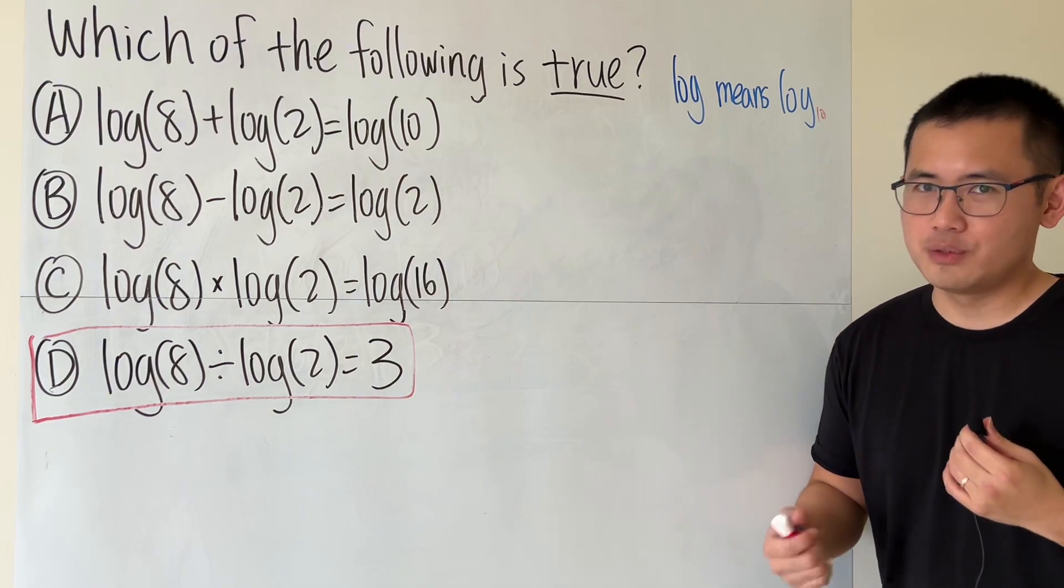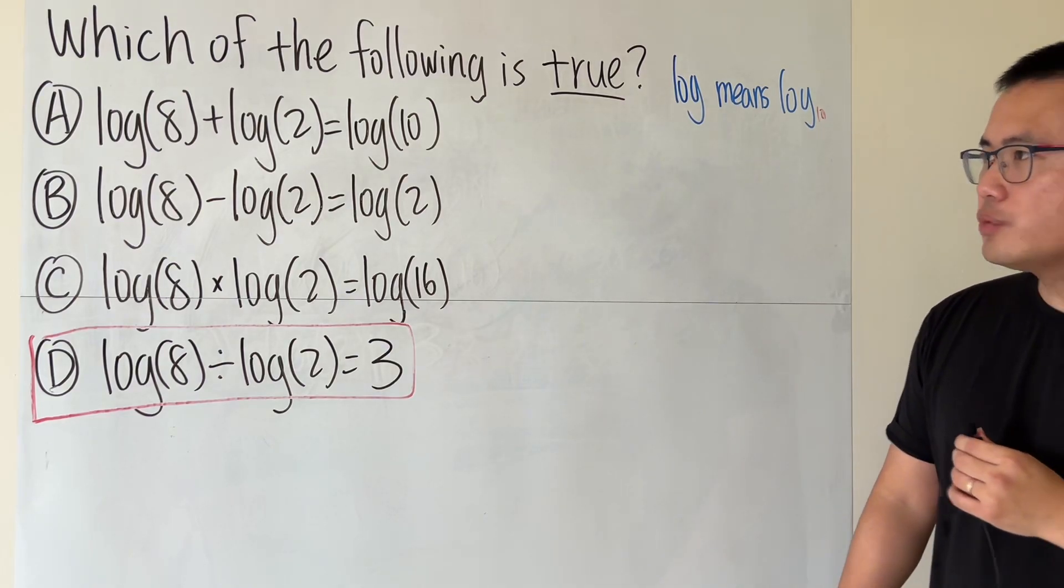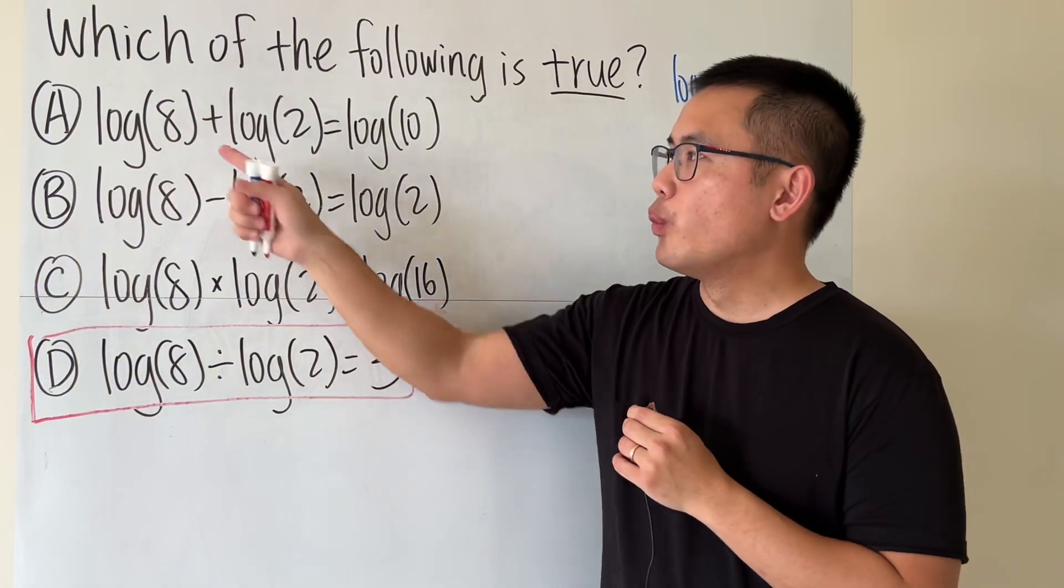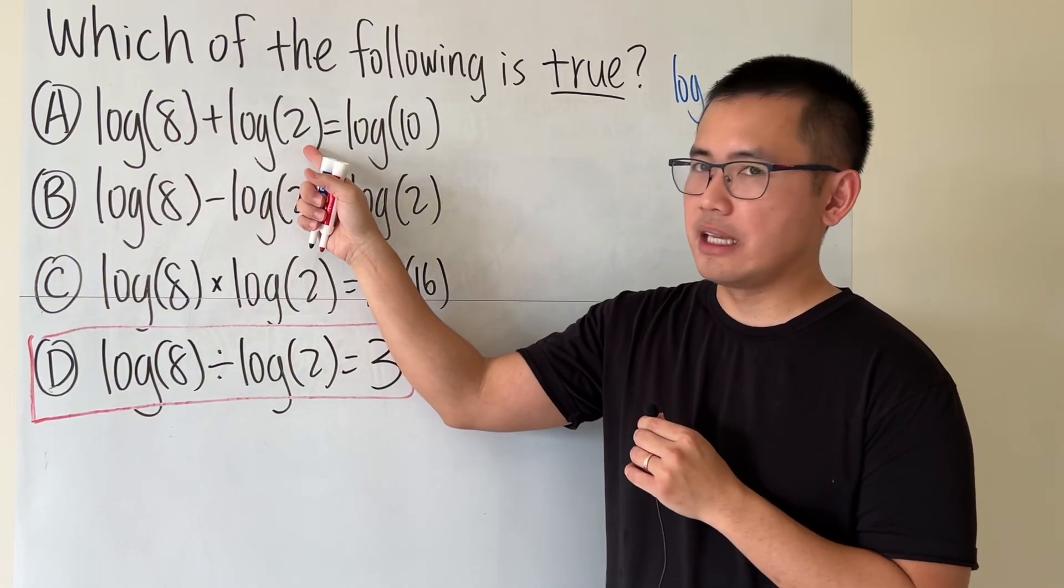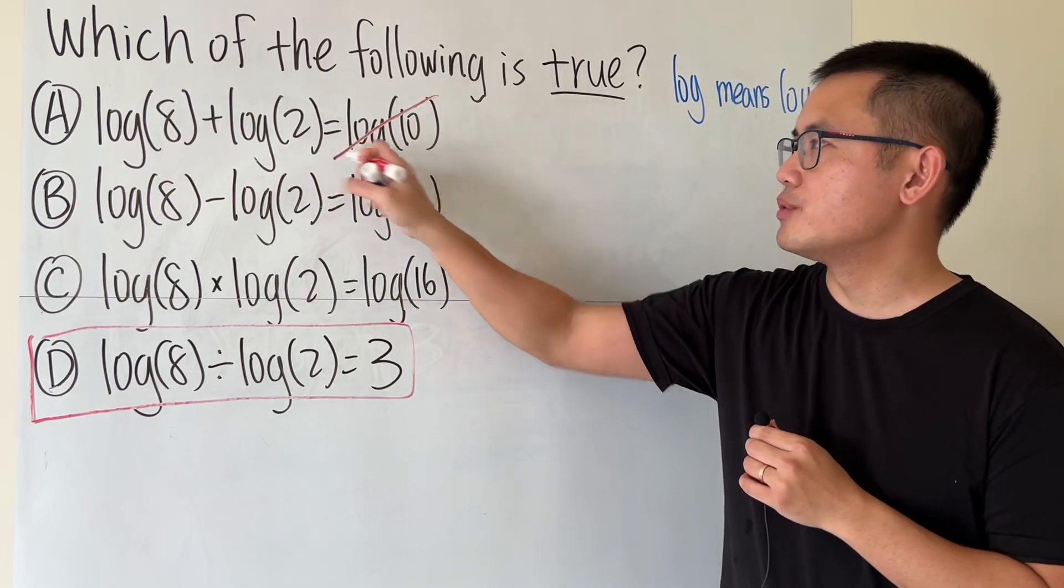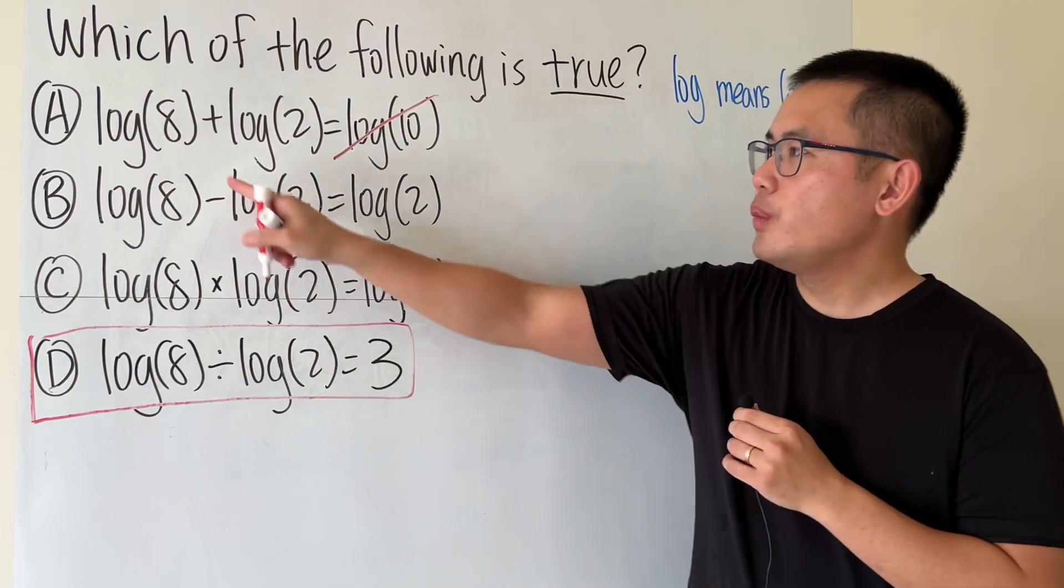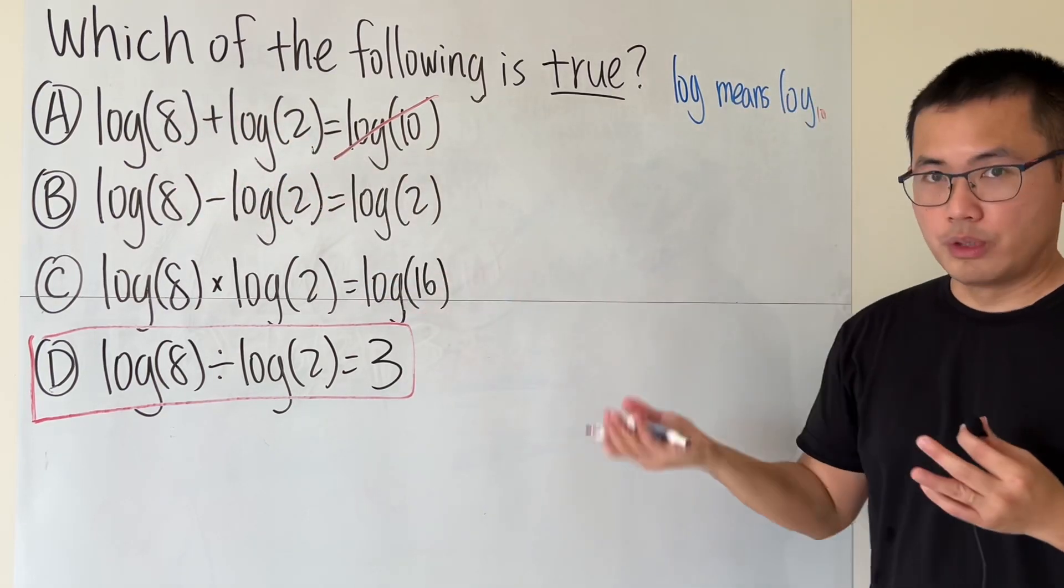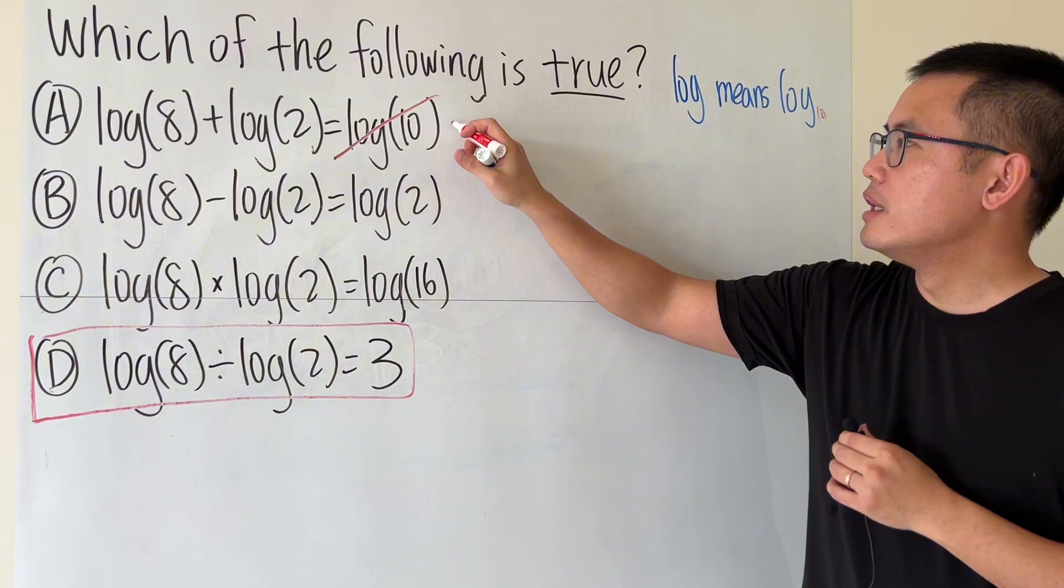For the first one, when we are adding two logs that have the same base, we do not add the insides together saying this is 10. This is wrong. Rather, we will multiply the insides together. 8 and 2 multiply them, we get 16 and we have the same base.